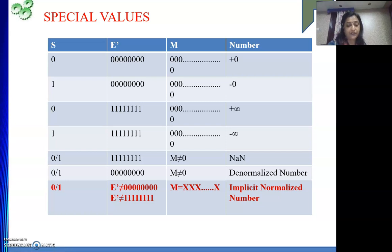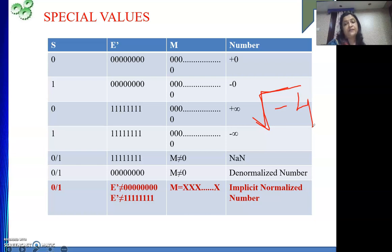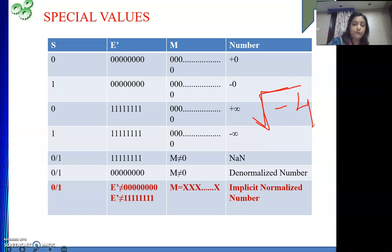Whenever we are doing the square root of a negative number, such as root of minus 4, that is not a number — NaN. You might have come across this error in coding when square root receives a negative value inside, giving an error output written as NaN, which stands for Not a Number. To indicate this error, E' has all 8 bits as 1 and M is not equal to 0 — M will have some non-zero value. That is NaN.